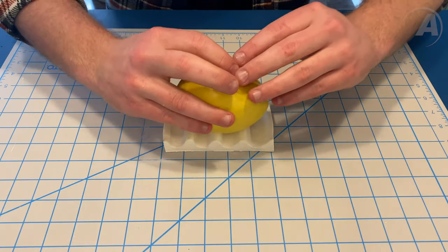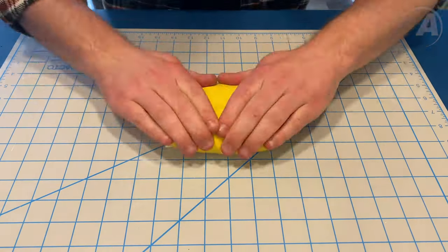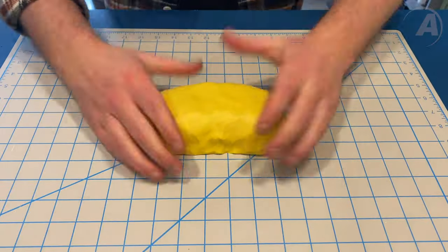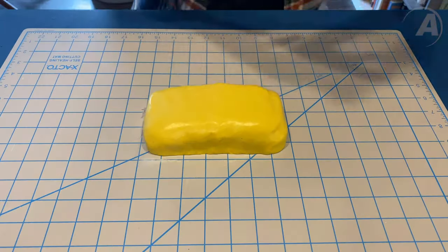Take out equal amounts of side A and side B, knead them together so it's a nice consistent yellow color, and then roll them into an even ball, pressing it over the clay and making sure all the details are captured.